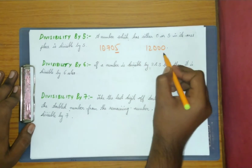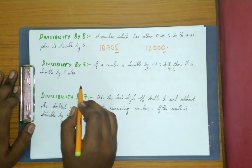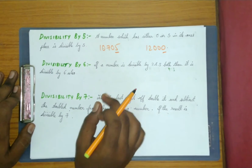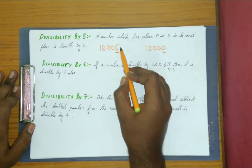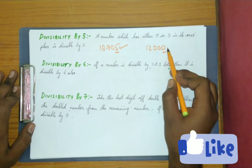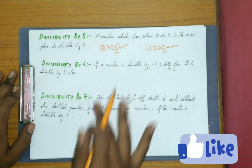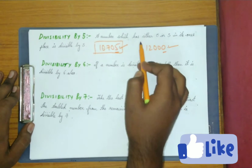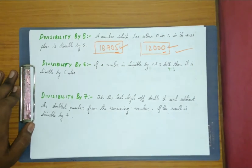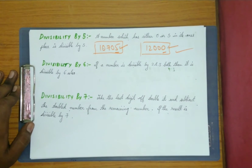When you observe the ones place here, it should contain zero or five. This number has five and this number has zero in its ones place, so both numbers are divisible by 5. That was the divisibility test for 5. Now let's go to the divisibility test of 6.